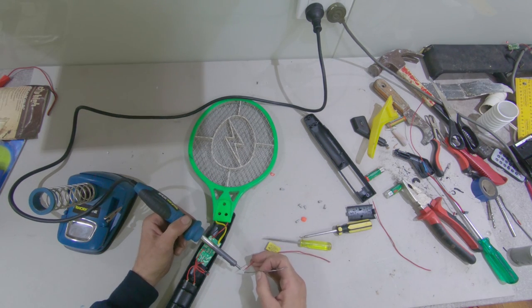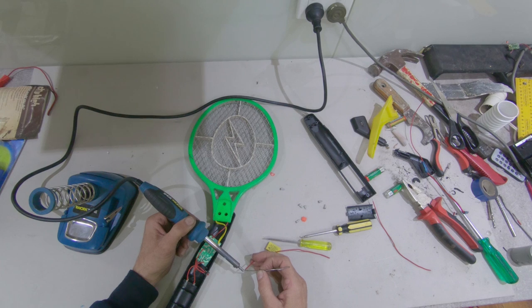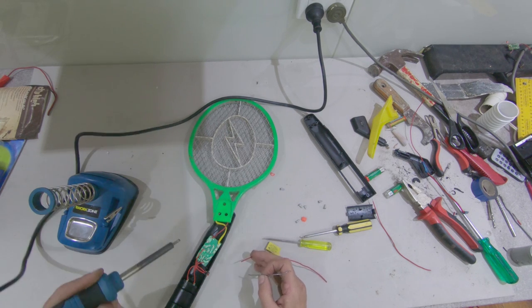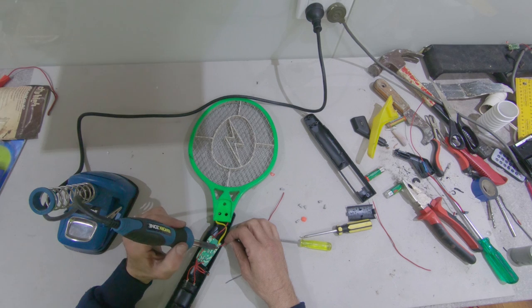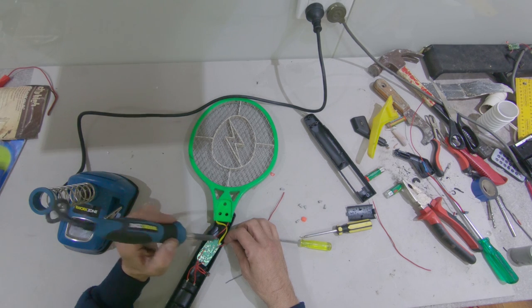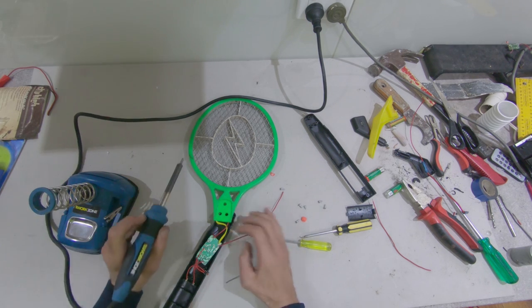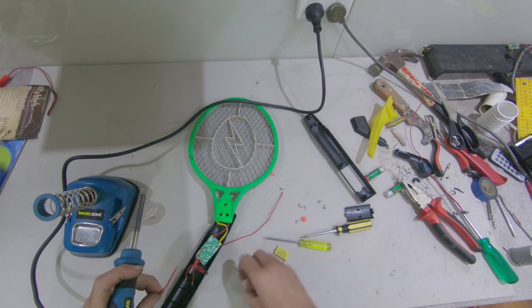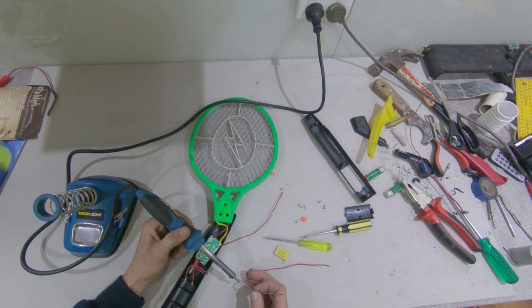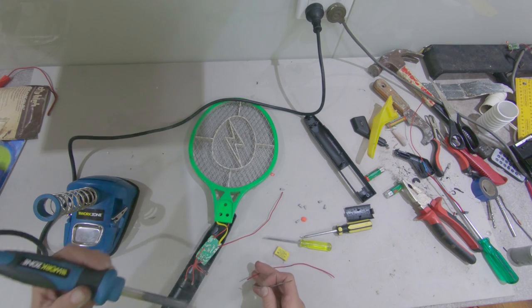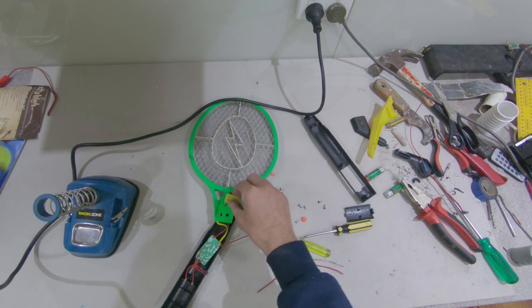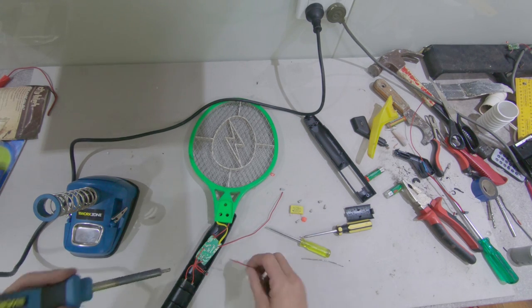Alright. I'm just going to tin some cables here, some wires. And solder them onto the capacitor pins. And I'll run these cables out through the actual bug zapper and mount that capacitor on the outside because it's not going to fit inside the actual case.